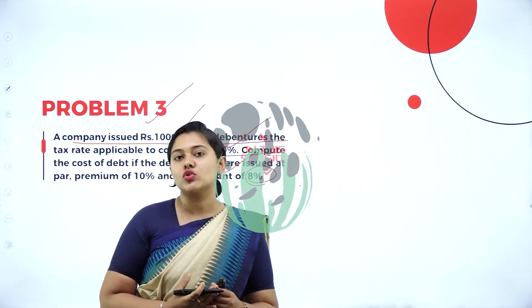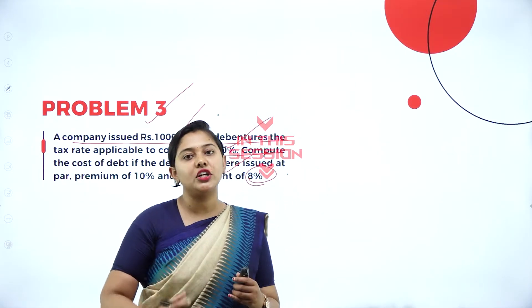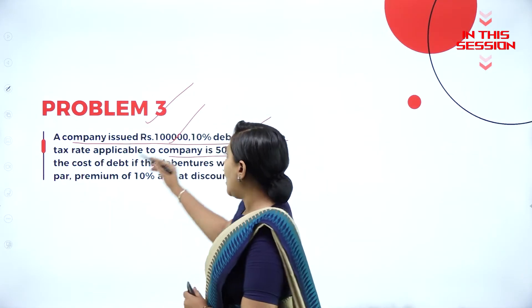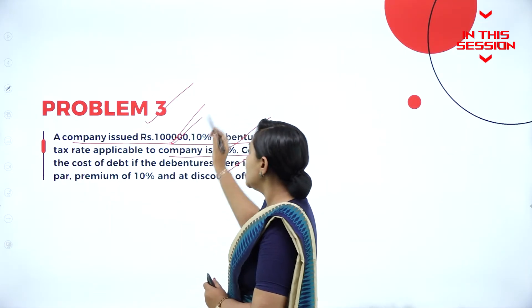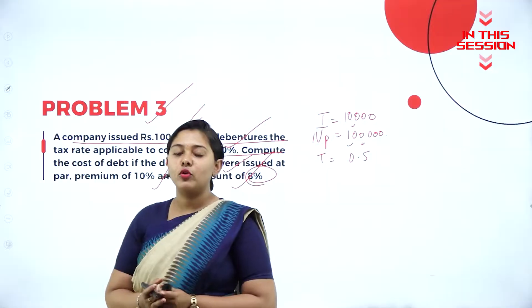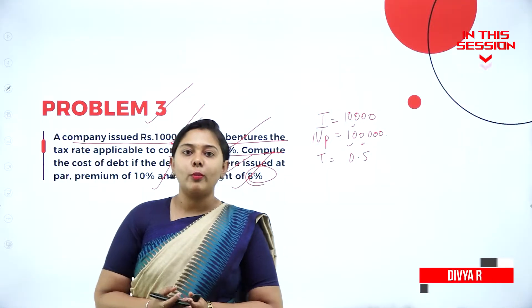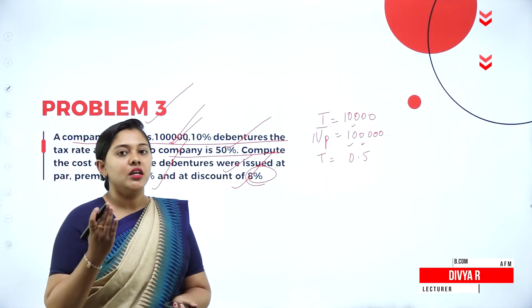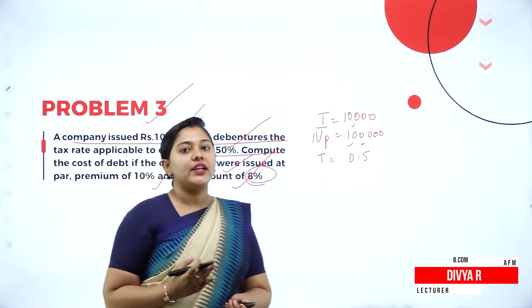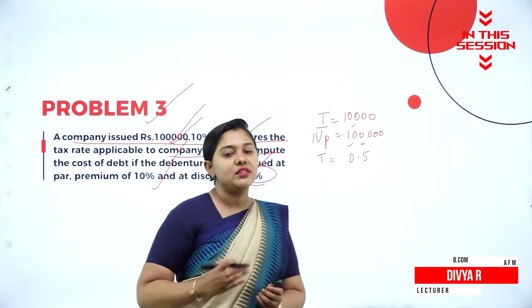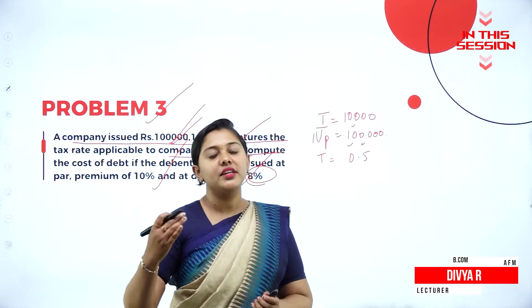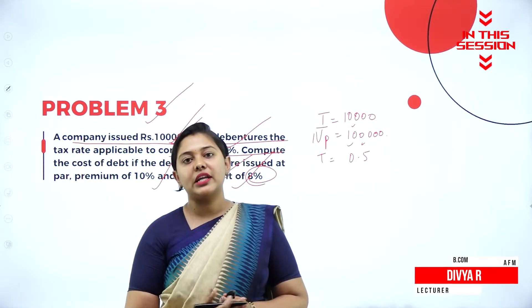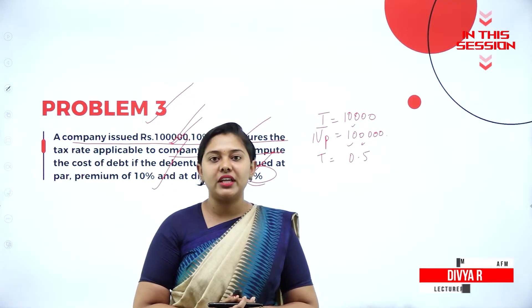Whenever the face value is not given, you need to take the amount which is given. Before tax, the formula is interest divided by net proceeds. After tax, it is interest divided by net proceeds, multiplied by 1 minus tax.